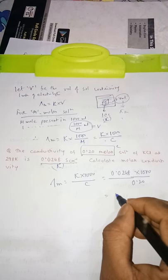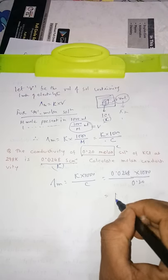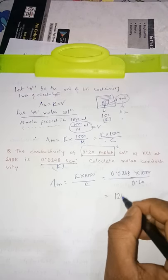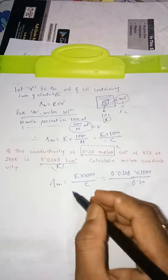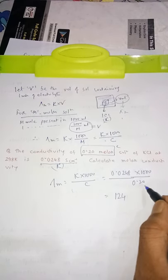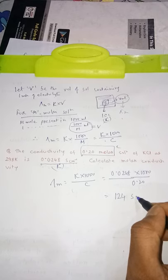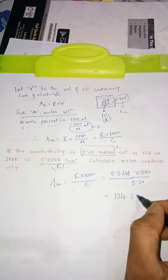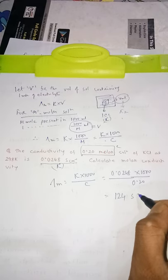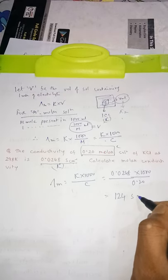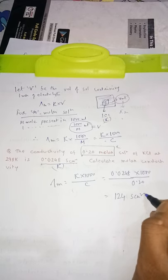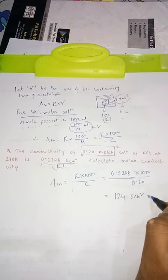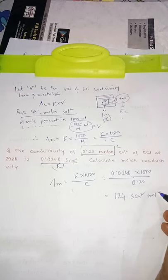So that turns out to be 124. The unit of kappa is siemen cm inverse, and the unit of c gives the final unit as siemen cm squared mol inverse.